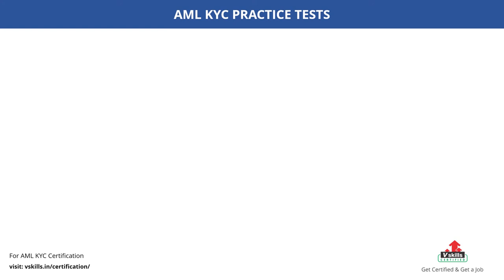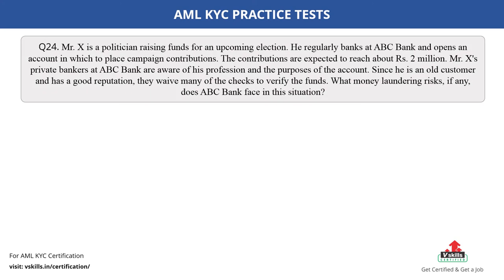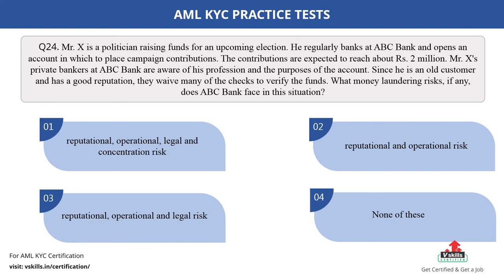Question number 24. Mr. X is a politician raising funds for an upcoming election. He regularly banks at ABC Bank and opens an account in which to place campaign contributions. The contributions are expected to reach about 2 million rupees. Mr. X's private bankers at ABC Bank are aware of his profession and the purposes of the account. Since he is an old customer and has a good reputation, they waive many of the checks to verify the funds. What money laundering risks, if any, does ABC Bank face in this situation? The options are: A. Reputational, Operational, Legal and Concentration risk; B. Reputational and Operational risk; C. Reputational, Operational and Legal risk; D. None of these. The correct answer is option C.